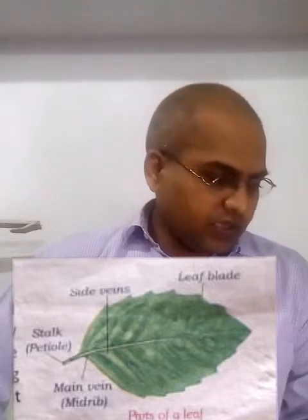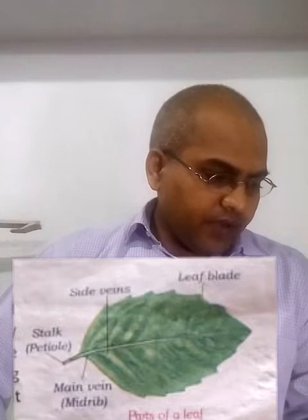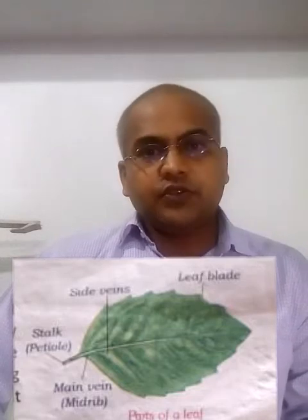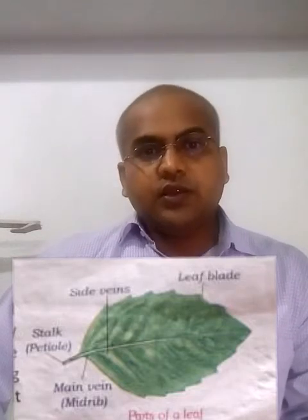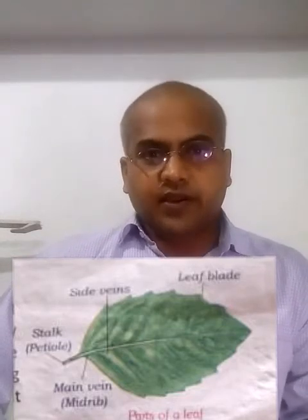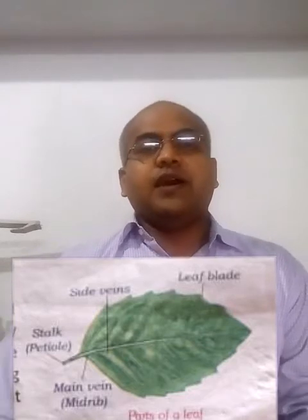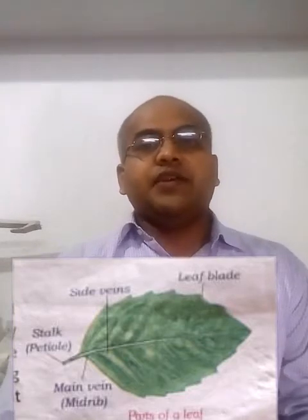The next question: water and carbon dioxide enter the leaf through — remember the word stomata. With the help of stomata, that is tiny kidney-shaped holes, carbon dioxide and water enter the leaf.